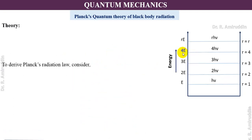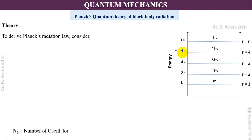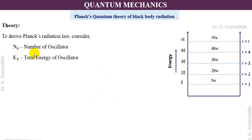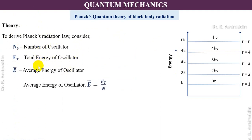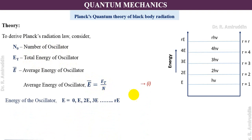To derive Planck's quantum theory of radiation, we define: N₀ as the number of oscillators, ET as the total energy of oscillators, and E-bar as the average energy of oscillators. The average energy E-bar equals ET divided by N — this is equation 1. Based on our assumption, the energy of each oscillator E takes values: 0, e, 2e, 3e, up to re.